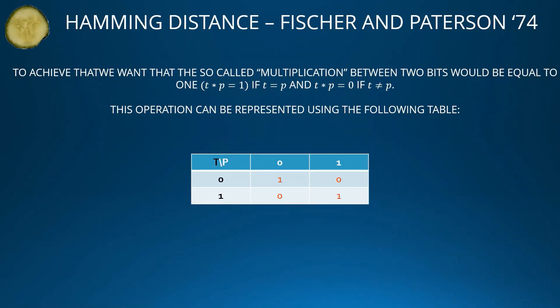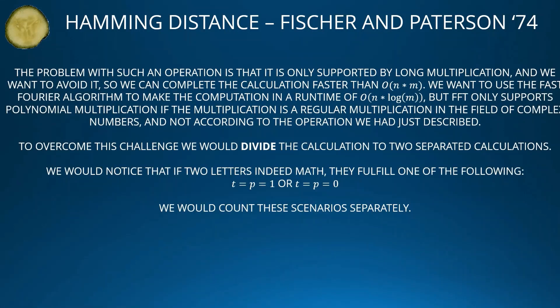Specifically, T × P = 1 if T = P and T × P = 0 if T ≠ P. This operation can be represented using the following table: when T = 0 and P = 0 we get 1; when T = 1 and P = 1 we also get 1; otherwise we get 0. The problem with such an operation is that it is only supported by long multiplication, and we want to avoid it.